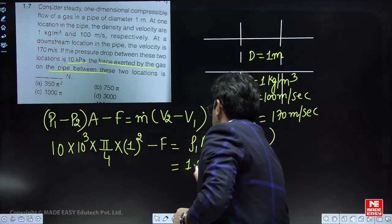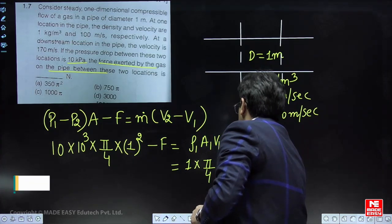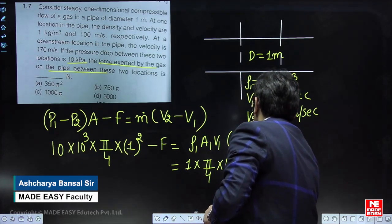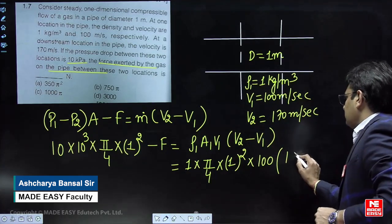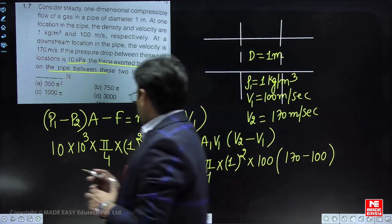What is the value of density? It is given as 1. This is π/4, constant area duct, 1 squared, into velocity 100. On the downstream side the velocity is given as 170 minus 100.